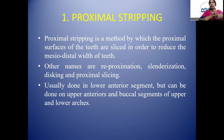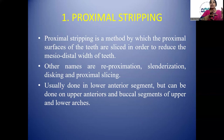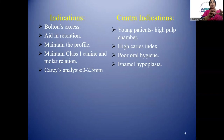Proximal stripping is a method by which the proximal surfaces of the teeth are sliced in order to reduce the mesiodistal width of the teeth. Other names for proximal stripping are reproximation, slenderization, disking, and slicing. It is usually done in the lower anterior segment, but can also be done in the upper anterior and the posterior segments of the upper and lower arches.